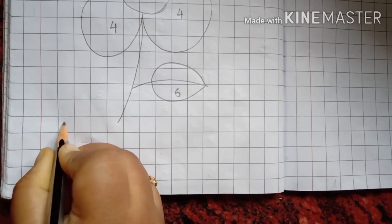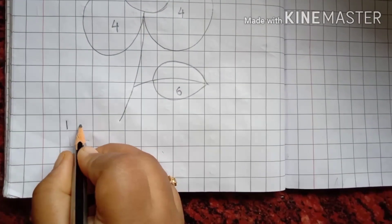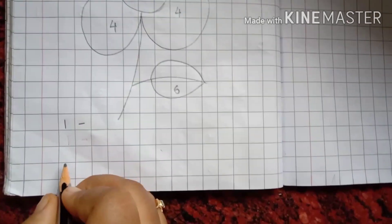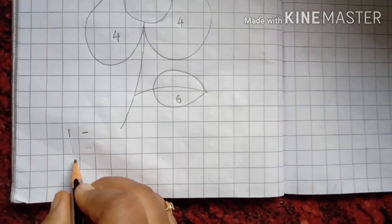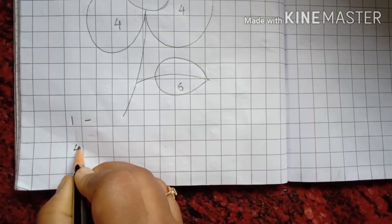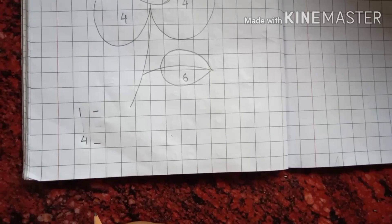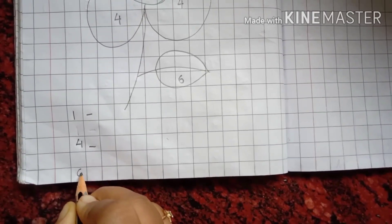Now, I will write here number 1. Put a dash like this. Then what number we have used? 4. So, we will write here 4. Give a dash and then 6.